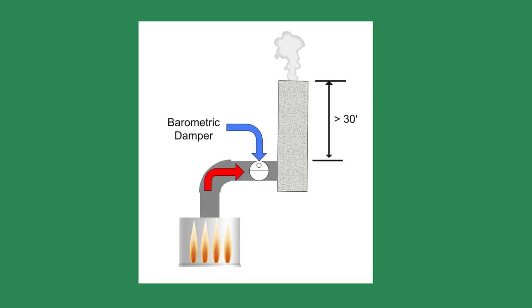A barometric damper is used for just its purpose. It is set for the proper boiler draft, and if the draft is higher than the setting, it will open and allow boiler room air into the chimney. This keeps the flame stable and lowers the heat lost up the chimney.